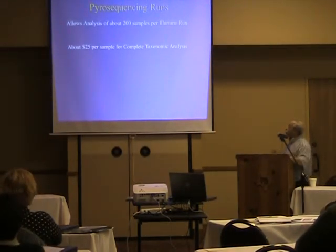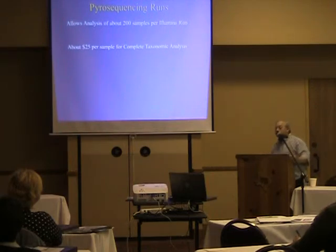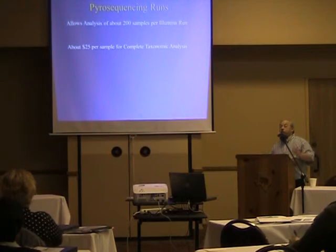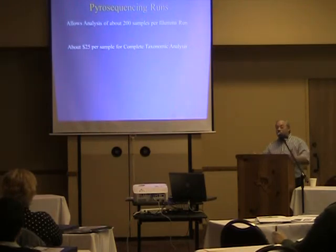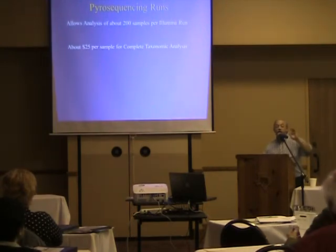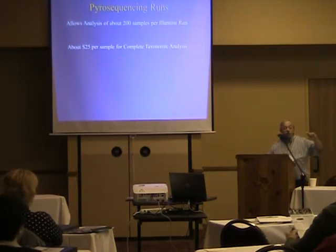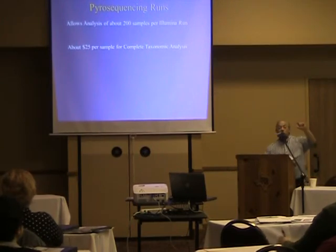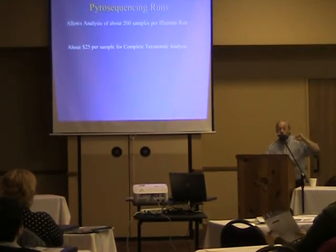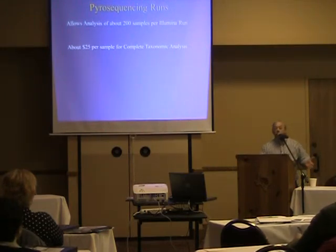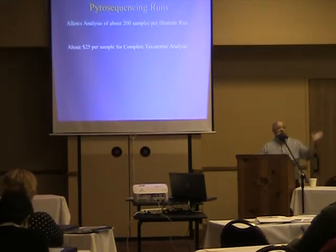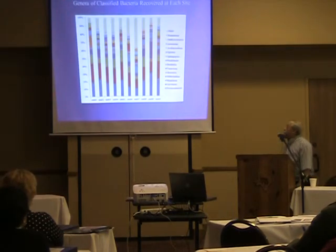These pyrosequencing runs allow you to look at 200 samples per Illumina run at about $25 per sample — fairly inexpensive and dropping. DNA sequencing technology is following Moore's Law just as computers have. The downside is that equipment becomes obsolete the day you purchase it — the price drops and you can't even give it away. But new machines are dropping in price like computers, and there's predicted to be a desktop model next year for $45,000 where you put in your sample, press a button, and it sequences everything.